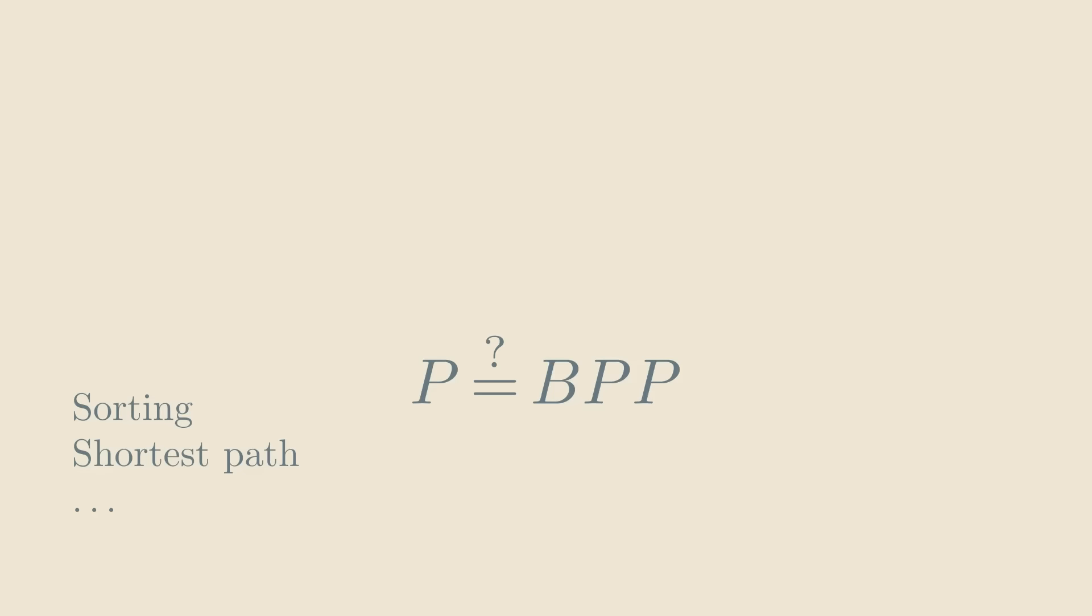And that way we'll make the success probability of the algorithm at least 99%. So the polynomial testing problem can be solved efficiently, that is, in polynomial time, using a randomized algorithm. However, it's not clear at all how to solve it with a fast deterministic algorithm.